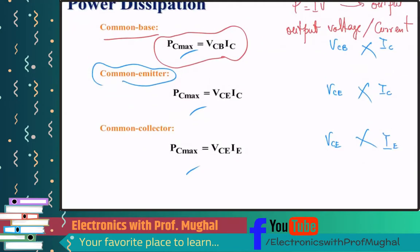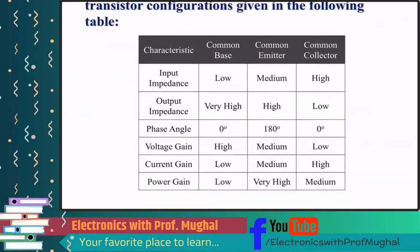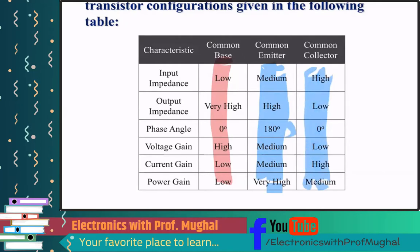Common emitter is the most widely used configuration. Looking at common base: input impedance is low, output impedance is very high, phase angle is zero, voltage gain is high, current gain is low, and power gain is low. For common emitter: input impedance is medium, output impedance is high, phase angle is 180 degrees. Common emitter is preferred mostly because it has a very high power gain.